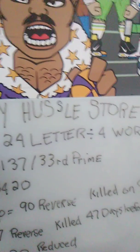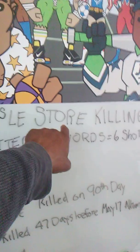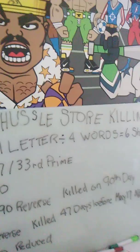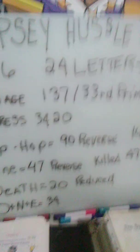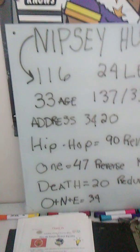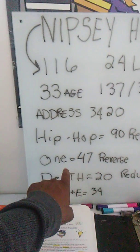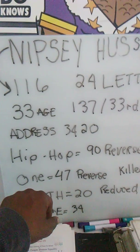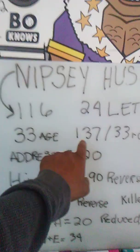We identified that 'Nipsey' adds up to 88, 'store' adds up to 77 which reduces to 58, and we identified the 33 years of age, the address, 'hip-hop,' and reverse ordinal. Now the word 'one' — it is one word with three letters and seven segments. The word 'one': 1 word, 3 letters, 7 segments — that's 137, the 33rd prime number, the age of the subject in this video.